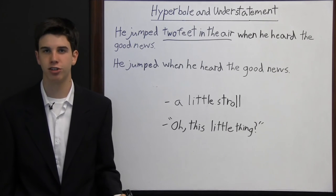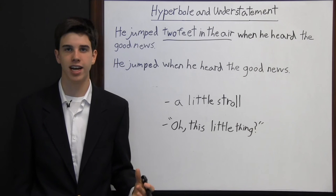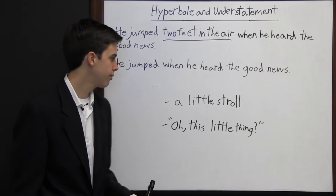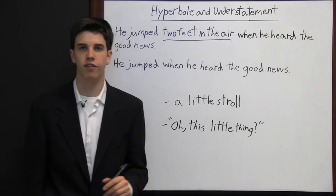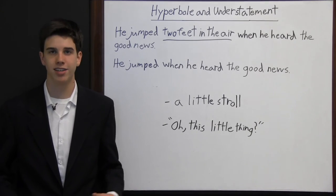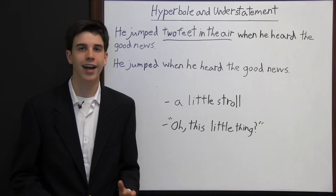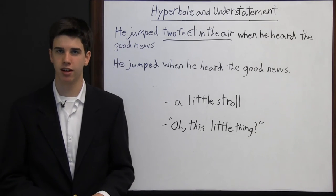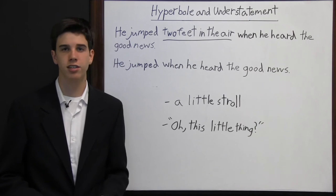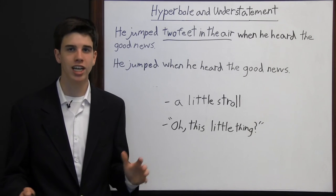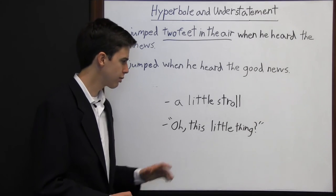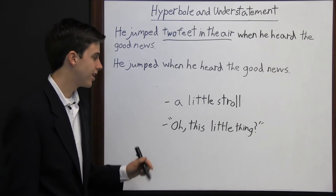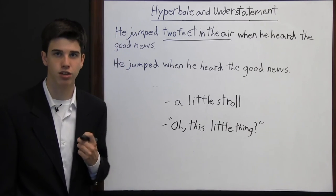The hyperbole is the opposite of an understatement. An understatement is describing something as less than it actually is. If someone hiked Mount Everest and then described it as a little stroll, this would be an example of an understatement. Many times an understatement is meant to convey modesty, like in that example — the hiker is not trying to make what they did seem like a big deal. But sometimes this has the opposite effect and the reader feels the writer is conveying false modesty. Like if someone pointed out a woman's huge engagement ring and she said, "Oh, this little thing" — this would come off as snobbier and insensitive.